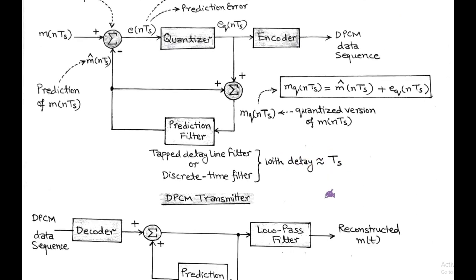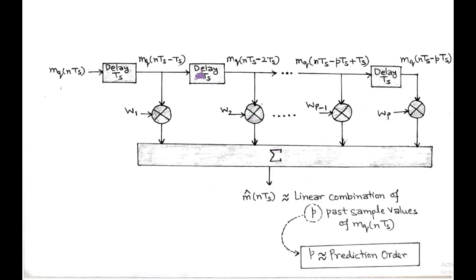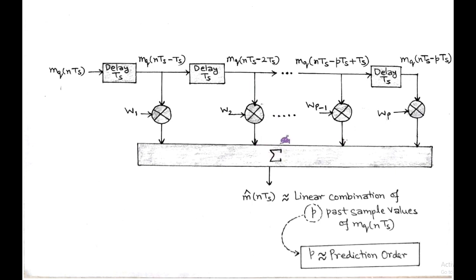The simplified tapped delay line filter with P number of delays is shown in the figure. The quantized signal M_Q(NTS) is delayed up to P past sampled values with corresponding weighted values W1, W2, up to WP. After linear combination of P past sample values, M-hat(NTS) is produced — that is called the prediction value — and P is called the prediction order.